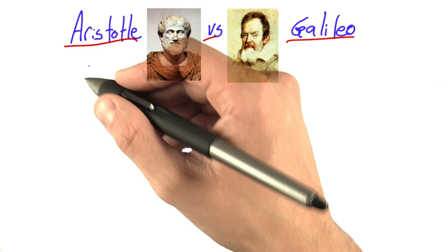So according to Aristotle, objects all fall at a constant speed, and that speed depends on their weight.